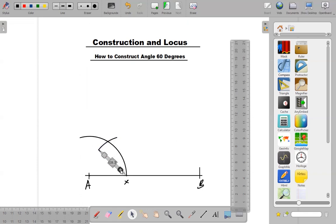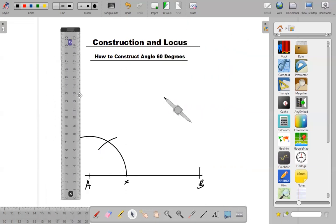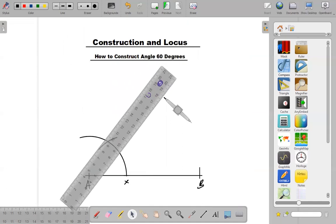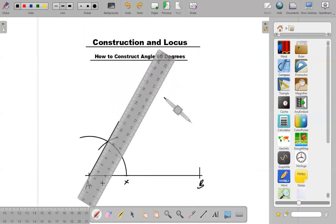Where the two arcs meet, join it to the reference point A with the ruler. Good, I think this is good enough.